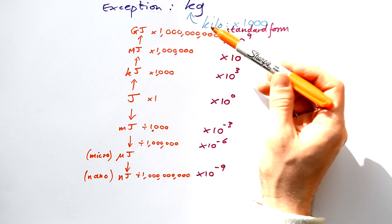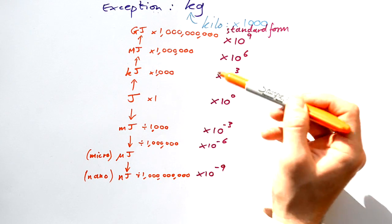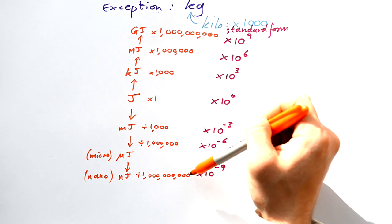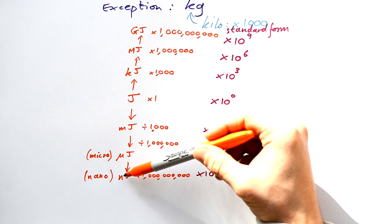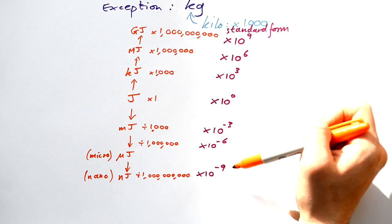Let's go down to a nanojoule, which is a billionth, and the way I remember it is nano sounds like nona, minus 9. That's how I remember it.